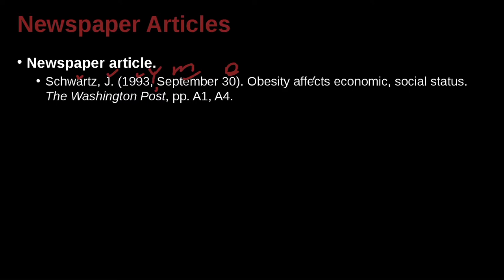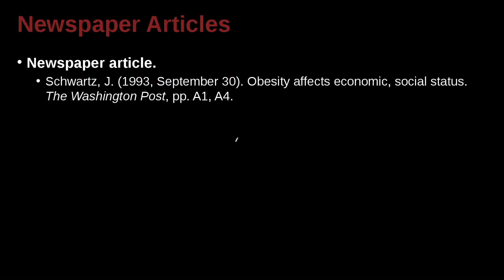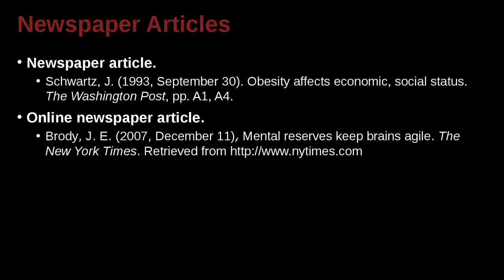'Obesity Affects Economic Social Status' — that is the name of the article inside the newspaper. The newspaper's name is the Washington Post, and you can see it's in italics. PP means that this is a page range, and they don't use regular page numbers — they have A1, A4 sections of the newspaper. Each case is a little bit different in the examples I've given you, and you need to go to the APA guidelines to see exactly how it fits what you're quoting.